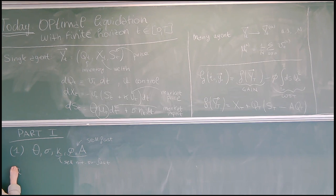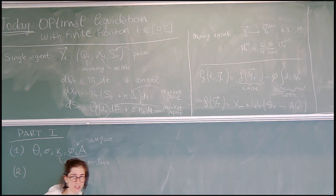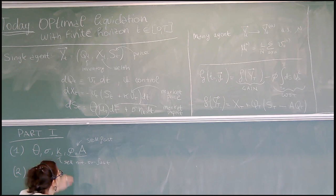Having said this, what we can do now is try to derive the Hamilton-Jacobi-Bellman equation along the same lines as lecture four.